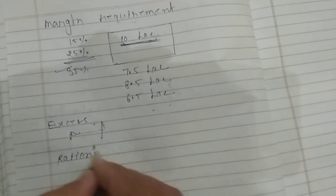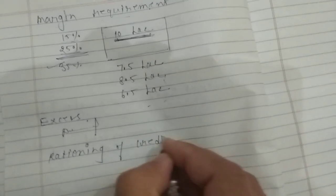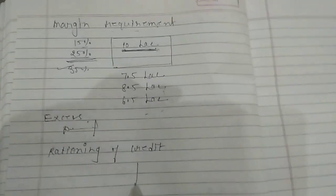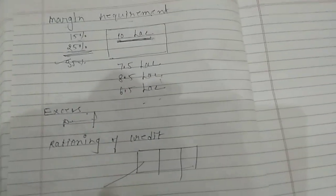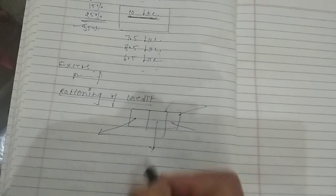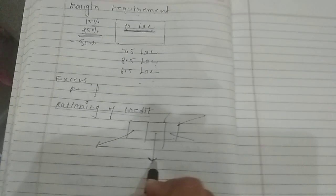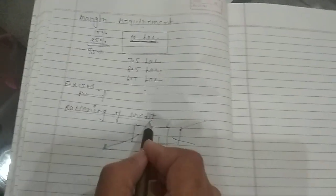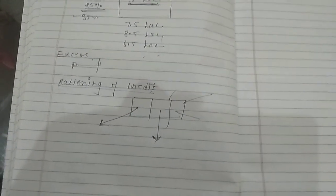Finally — though this is not in the CBSE syllabus, just mentioning it — rationing of credit. Rationing of credit means that the total amount of credit available is distributed across different activities: how much for the primary sector, how much for the secondary sector, how much for the tertiary sector, how much for home loans, how much for education loans. The bank increases or decreases the quota for particular activities. For example, if inflation is occurring due to the industrial sector, the credit ratio for industrial sector is reduced. If the agricultural sector is going down and needs more credit, its share can be increased. By adjusting credit ratios, the bank tries to stabilize the economy.